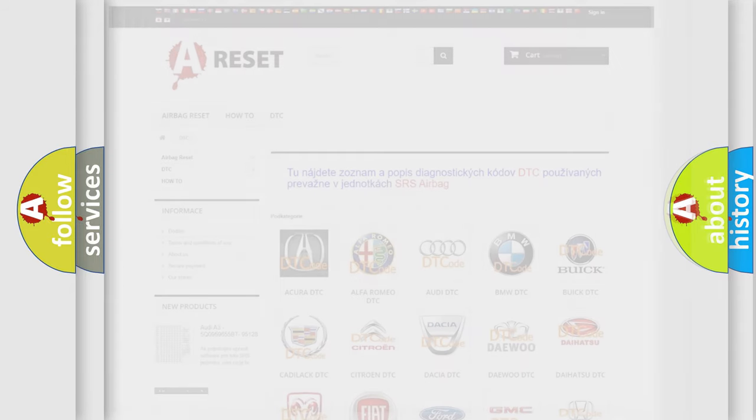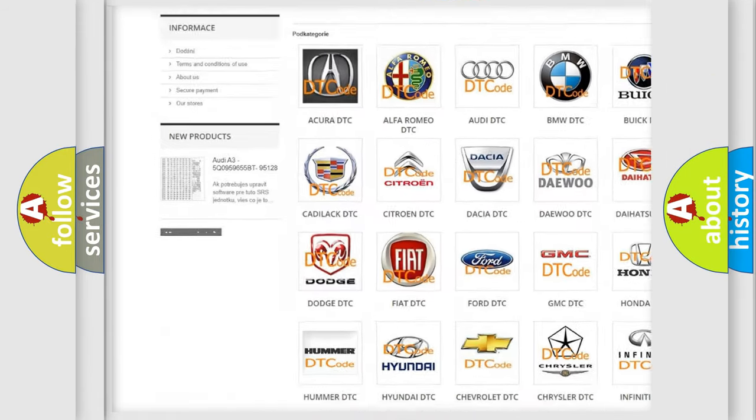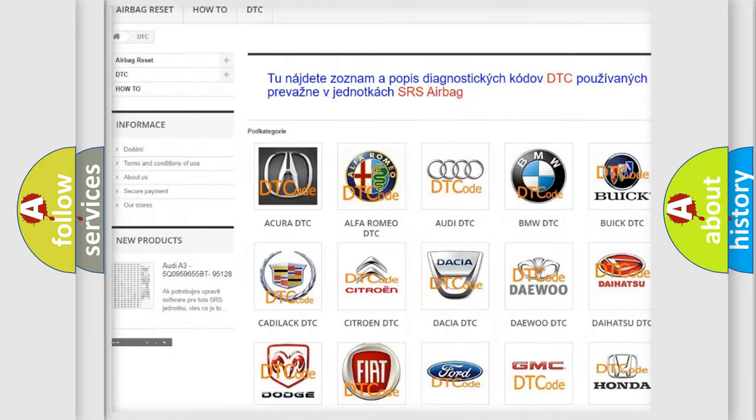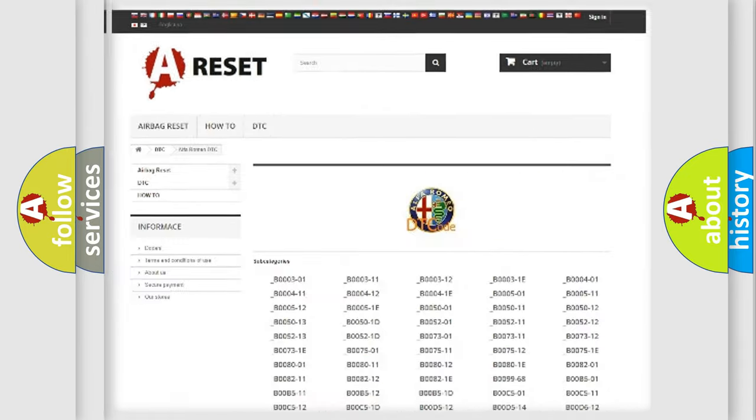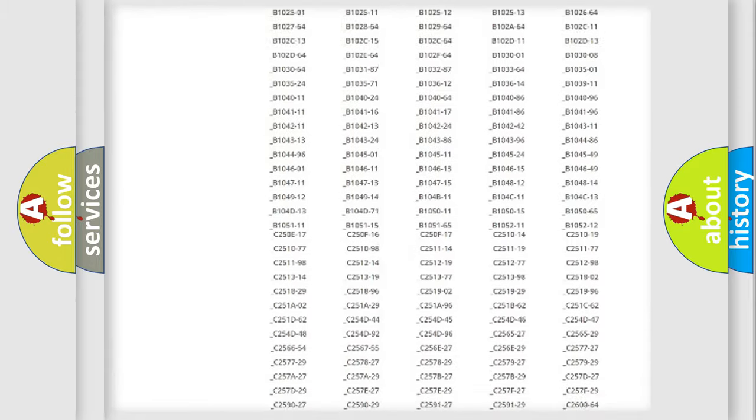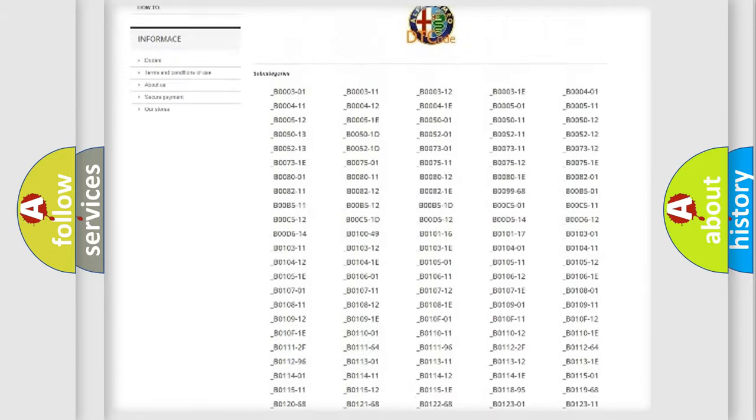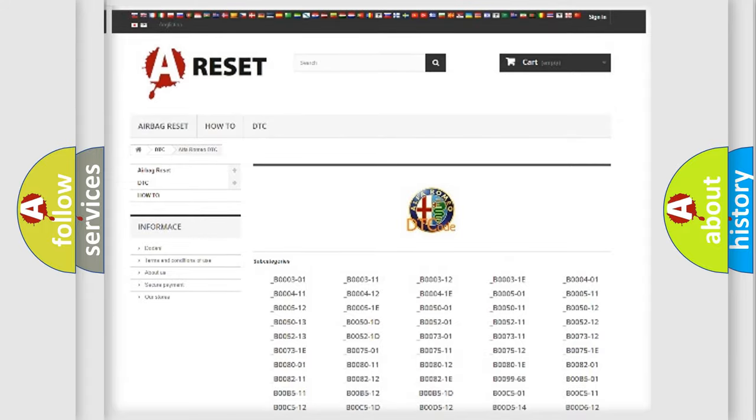Our website airbagreset.sk produces useful videos for you. You do not have to go through the OBD2 protocol anymore to know how to troubleshoot any car breakdown. You will find all the diagnostic codes that can be diagnosed in a car, Alfa Romeo vehicles...